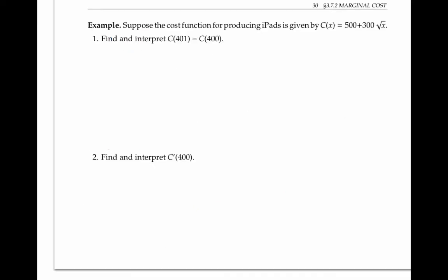To make this a little more specific, let's use a cost function of C(x) = 500 + 300√x. In this example, x is supposed to be the number of iPads that are produced, and C(x) is the cost of producing them in dollars.